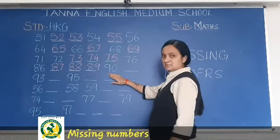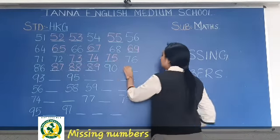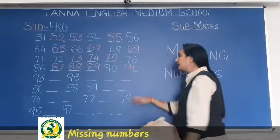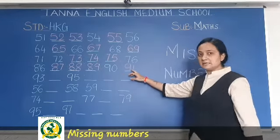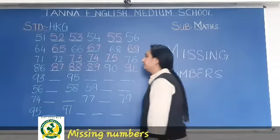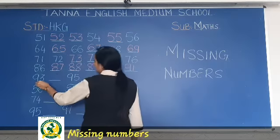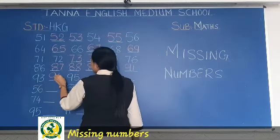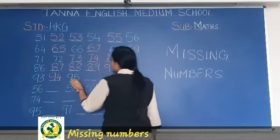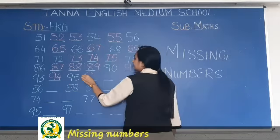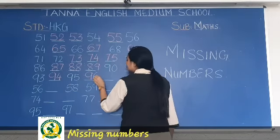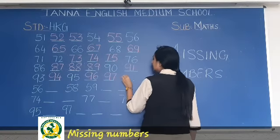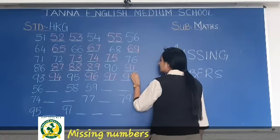98 is written, so write 91. You have to fill in the blank here. Then 93, 94, 95. Then 96, 97, 98.